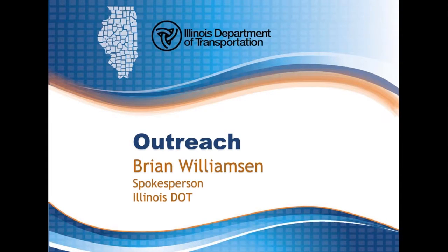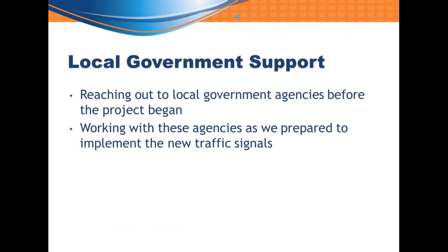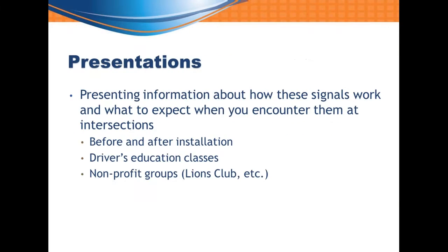This was a new technology that people in the area weren't used to driving near or encountering, and we were tasked with making sure everybody was on board, aware it was coming, and getting the word out both before and after installation. A traffic signal doesn't just impact drivers at that intersection — it impacts communities. Local government support was a big part of our outreach before these signals were installed anywhere. We reached out to a number of government agencies in the Peoria area before the project began and worked closely with them as we got ready to put these new signals into use.